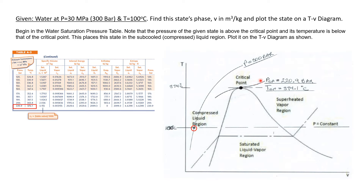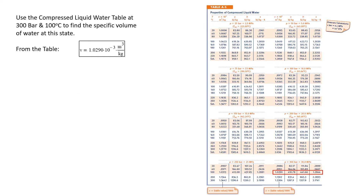Now we need to find the specific volume. Since we know the phase is a subcooled liquid — or as the table calls it, a compressed liquid — we go to the compressed liquid table, find the subtable at 300 bar, and look in the row where temperature is 100 degrees C. The specific volume in the first column is 1.0290, divided by 1000, so v = 1.0290 × 10⁻³ cubic meters per kilogram.